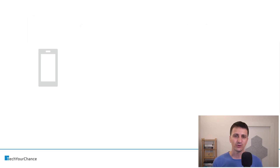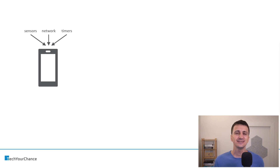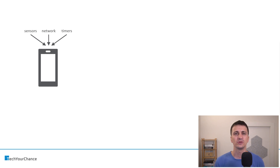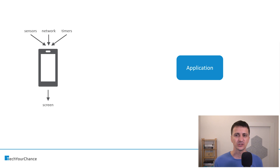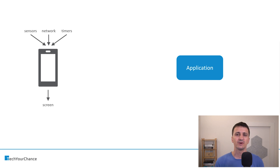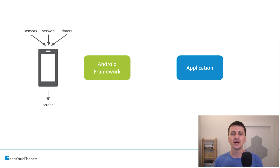So how is this related to Android framework? Imagine we have a device — everyone has a device, right? This device takes in many inputs: sensors, network, and timers. And it has outputs, for example, the screen and sounds and rotation. We also have our application, and of course we write an application to do something with the device. But we do not interact with the device directly. Instead, we have Android framework sitting in between our application and the hardware. This framework interacts with the hardware on one side and with our application on the other side.